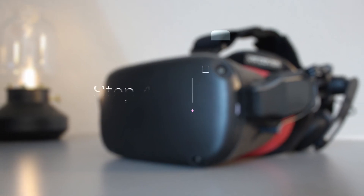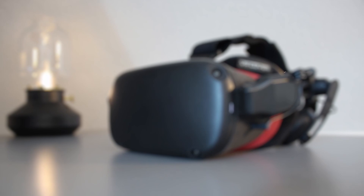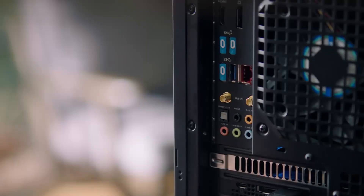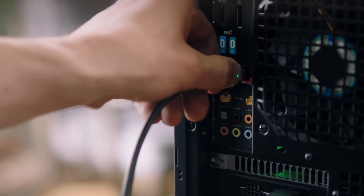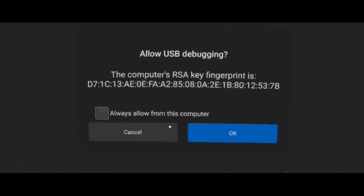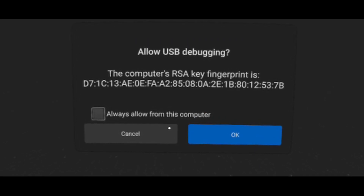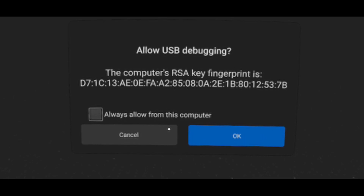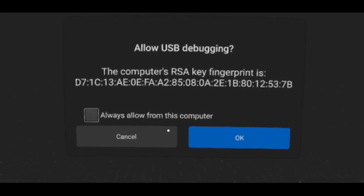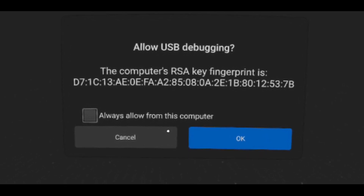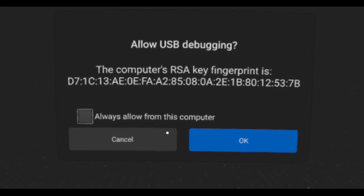Step 4: now that we have developer mode activated, it's time to hook up the Quest to the PC using the USB cable that we prepared earlier. If this is the first time you're connecting the Quest to this specific PC, you will be prompted with a pop-up inside of the headset asking you to allow USB debugging. Check "Always allow" to prevent having to deal with this pop-up again, and hit OK.